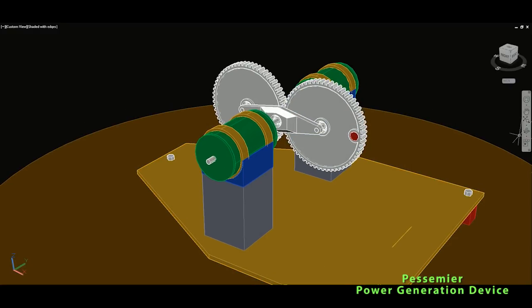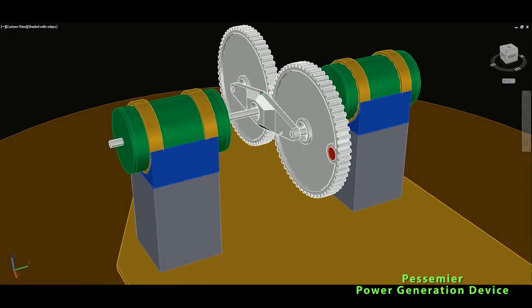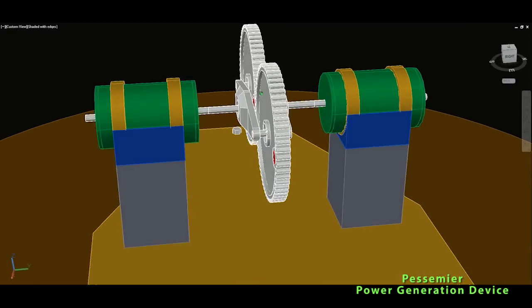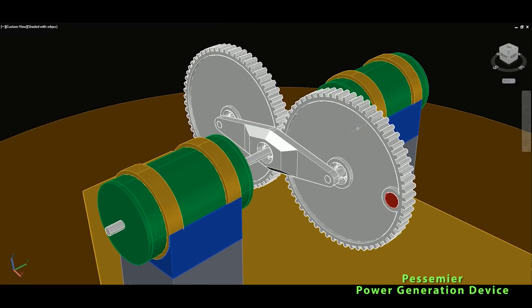Alright, so there are not too many components here as you can see. We have, we can start with these two flywheels. So these over here and these over here will be our primary flywheels which will generate,